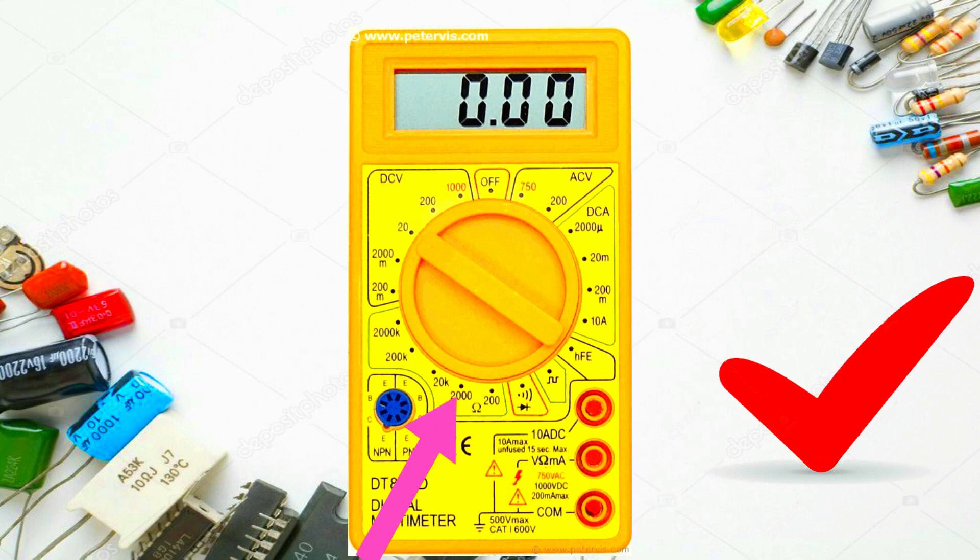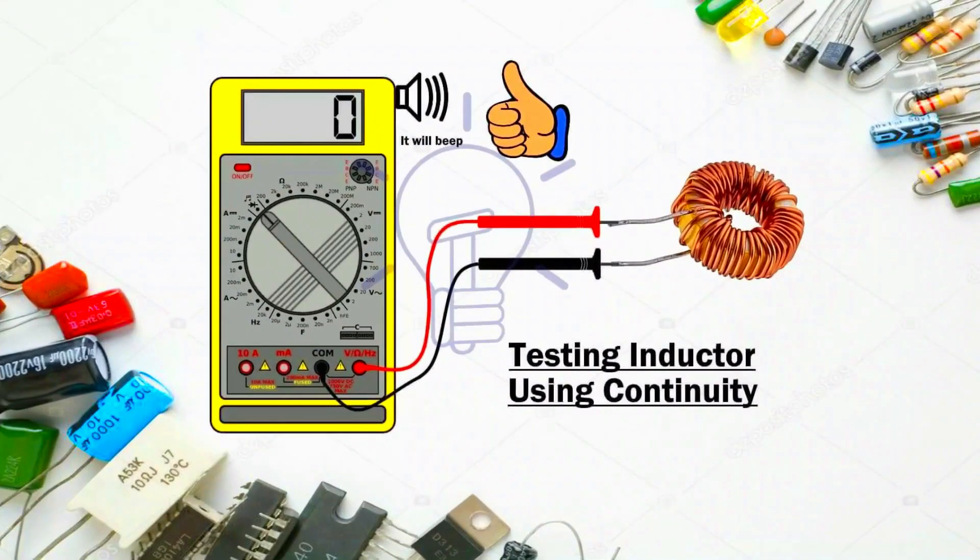What is continuity test mode? Continuity is the presence of a complete path for current flow. The circuit is complete when its switch is closed.